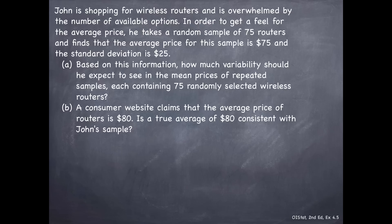Let's stop here and try to digest the information we've gotten. We're told he's taking a random sample of 75 routers, that means n = 75. It's always good practice to note what you're reading as you go along using proper notation. The average price for this sample, so that's a sample mean, is $75, meaning x̄ = 75 as well.